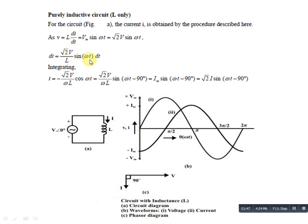sin(ωt) का integration -cos(ωt) होता है, और omega नीचे आ जाता है। sin(ωt) को cos(ωt) में convert किया, क्योंकि integration में sin(ωt) का result -cos(ωt) होता है। cos को sin में convert करने पर sin(90° - θ) = cos(θ) से, यहाँ minus sign आता है — यानी current में minus 90° का lag है। Inductive circuit में current lag होता है।